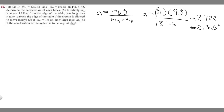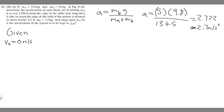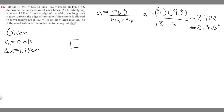Part b: if initially m sub a is at rest 1.250 meters from the edge of the table, how long does it take to reach? Let's write down what we're given for this problem because it's going to be a kinematic equation. It's saying m sub a, our block, is at rest, so we know v sub zero is going to be zero meters per second because they're telling us it's initially at rest. The block is moving 1.250 meters — that's where the edge of the table is. So the change in x is 1.250 meters.